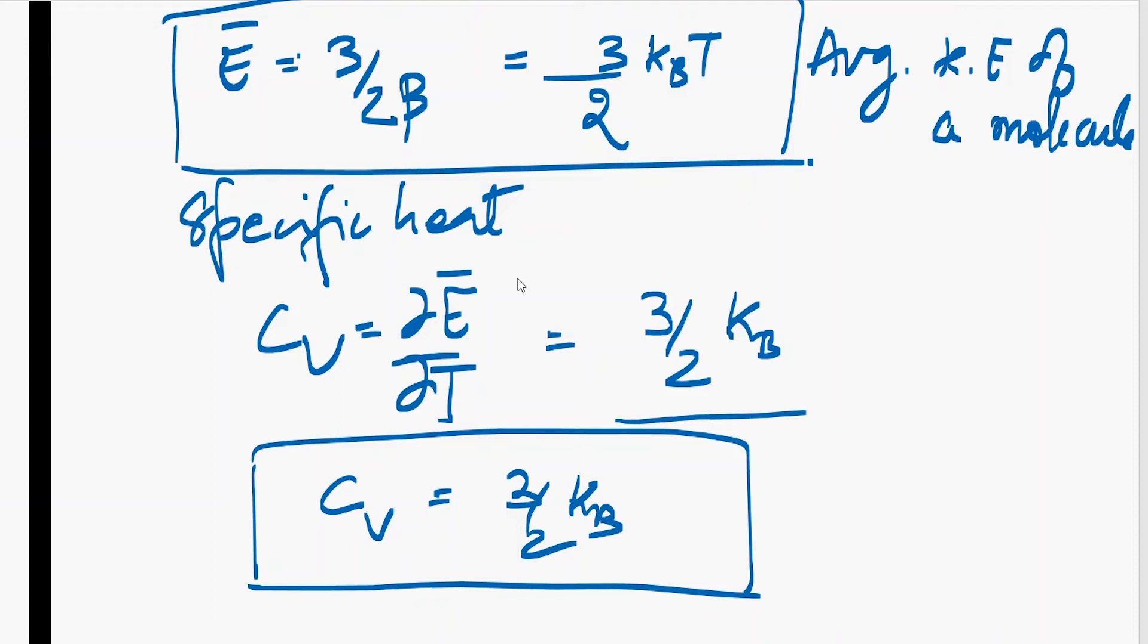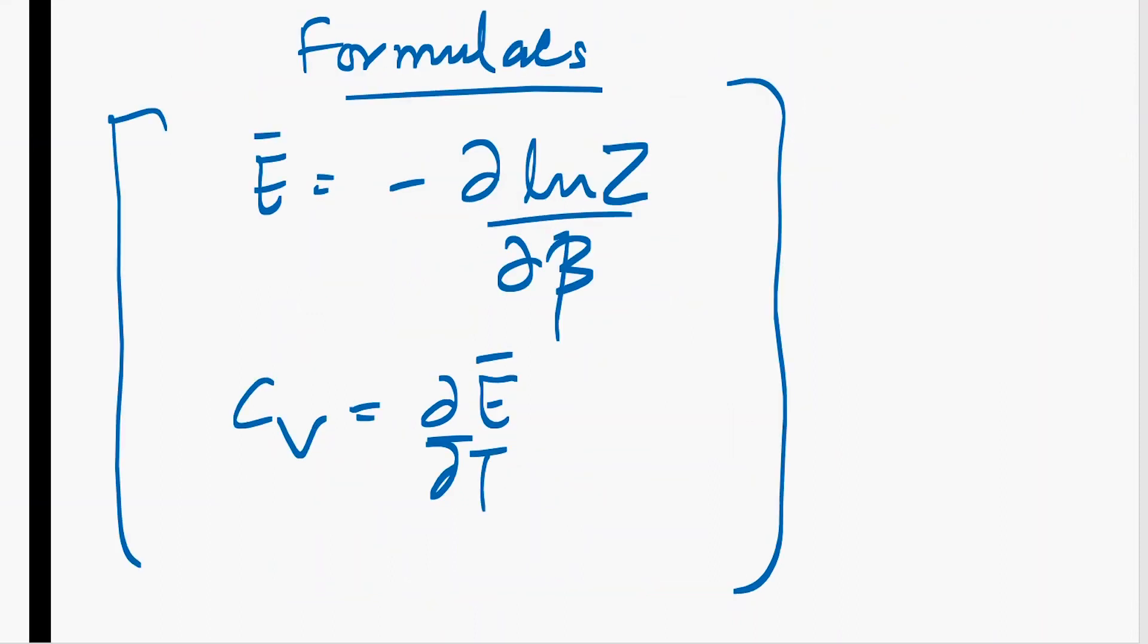And hence we find the specific heat. It is simple, we just have to differentiate the average energy with temperature. This comes out to be 3 by 2 kB, and this is our specific heat.